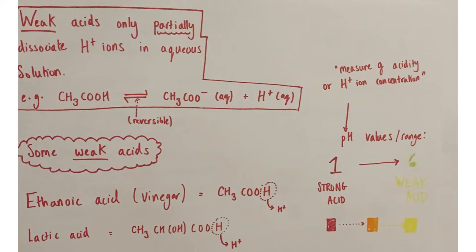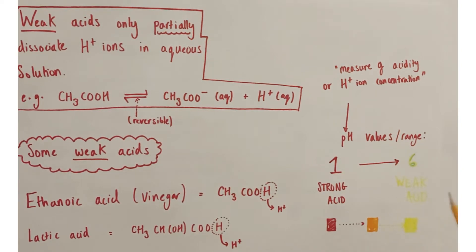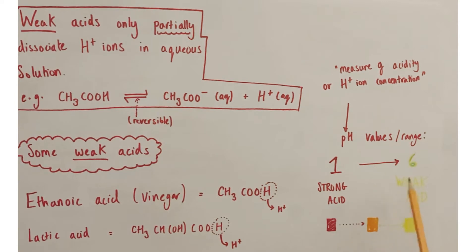pH is a measure of acidity — specifically a relative measure of the hydrogen ion concentration of the acidic solution. Acids have a pH range of 1 to 6; the lower the number, the greater the strength of the acid. Universal indicator colors illustrate this: deep red indicates pH 0–2, orange around pH 5, yellow closer to pH 6, and green at pH 7 which is neutral.